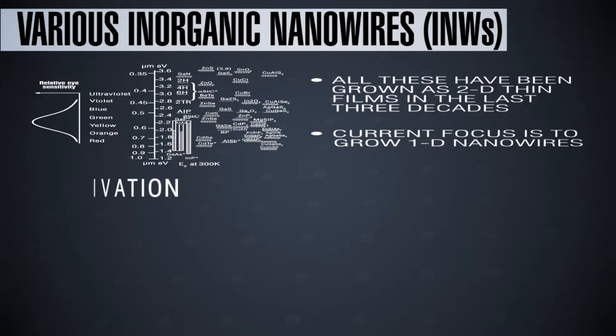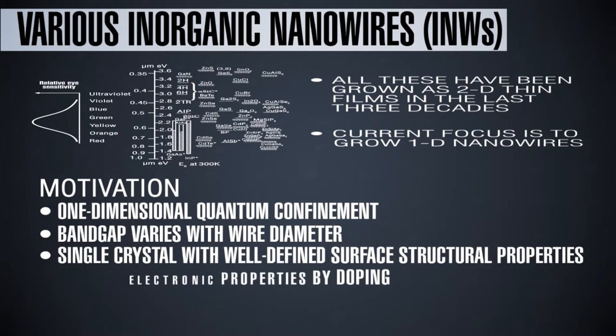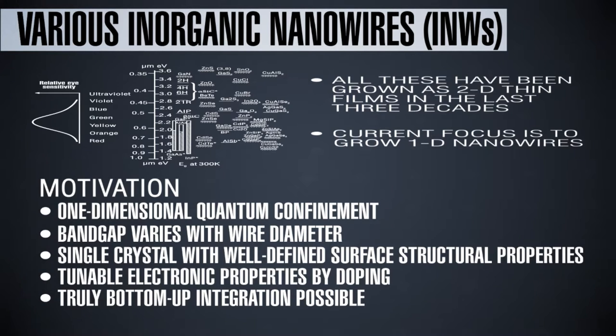So, what is the motivation for growing these materials in the form of nanowires? When you grow the materials in the form of one-dimensional wires, you can get quantum confinement when the radius reaches values below the Bohr radius for that material. In fact, the bandgap begins to increase when the diameter of the nanowire goes below the Bohr radius. It's also possible to get very high-quality single crystal nanomaterials with very well-defined surface properties. You can also dope these nanowires. And finally, these nanowires enable truly bottom-up integration to make devices and systems.